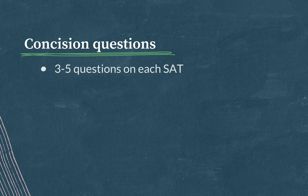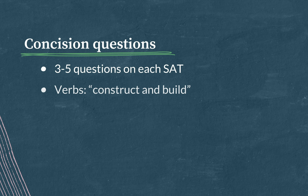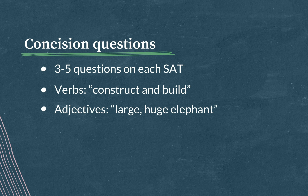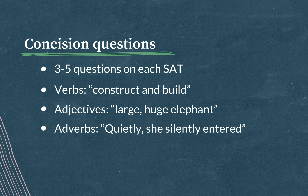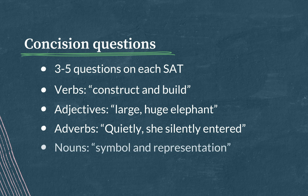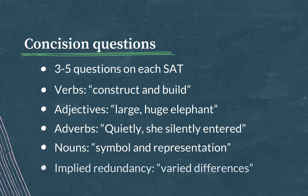You can have compound verb phrases like 'beavers construct and build dams in streams' — construct and build is the redundant part. You can also have redundant adjectives like 'this large huge elephant,' redundant adverbs like 'quietly she silently entered,' redundant nouns like 'a symbol and representation of wealth,' and redundant implied descriptors like 'varied differences.'